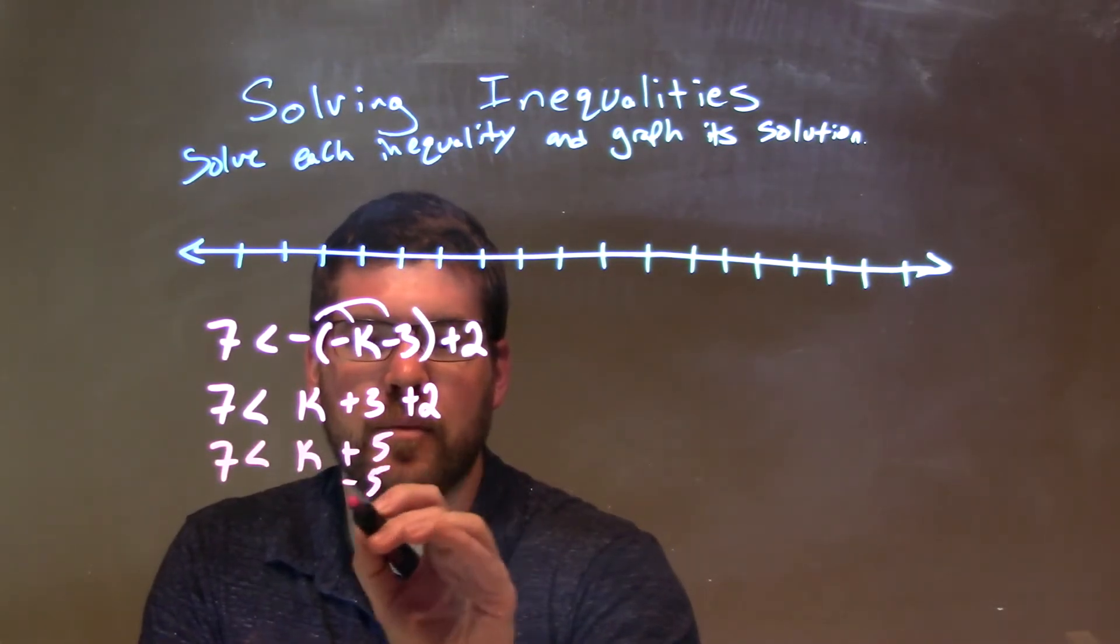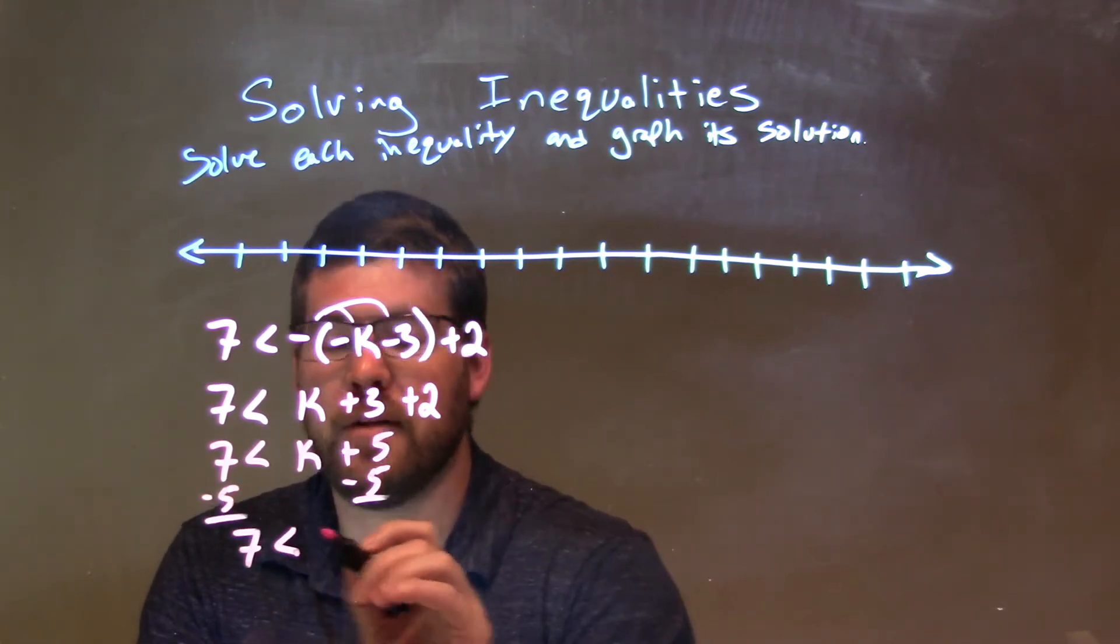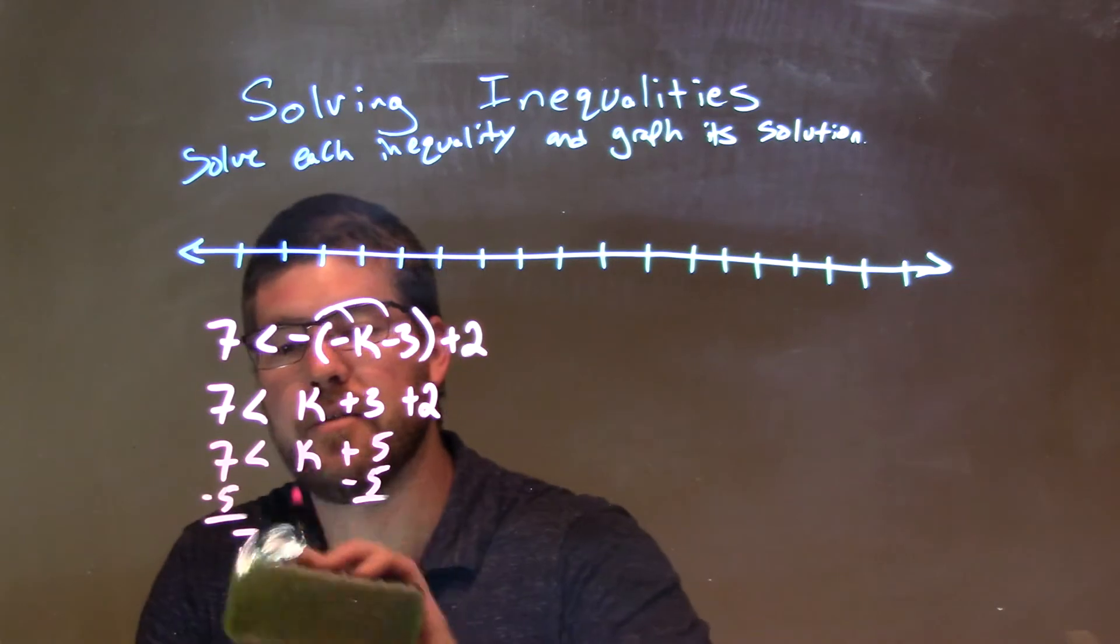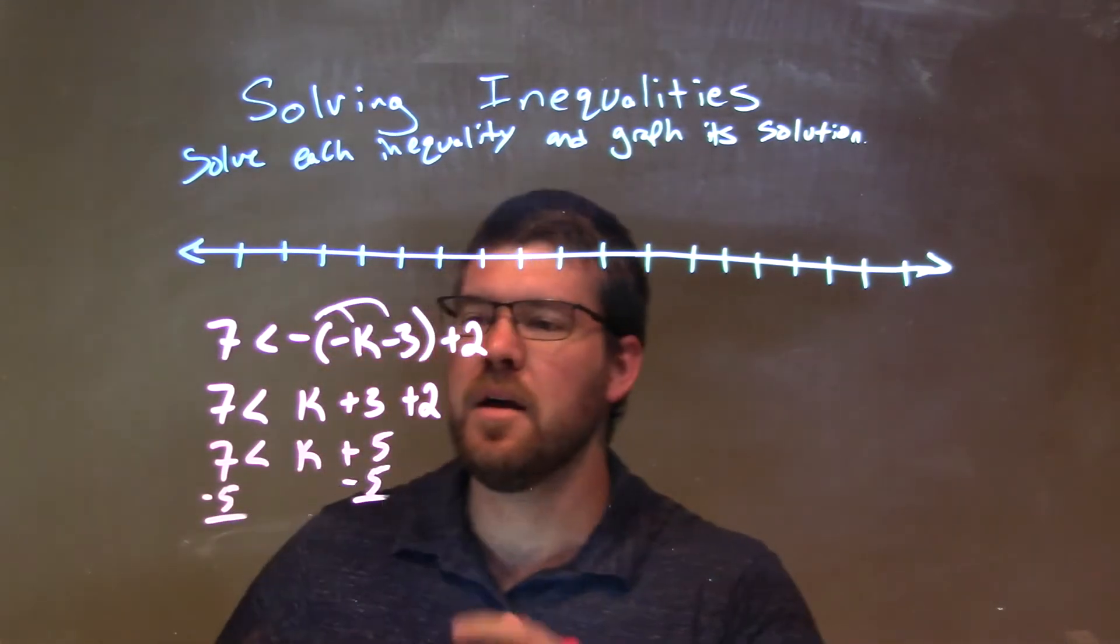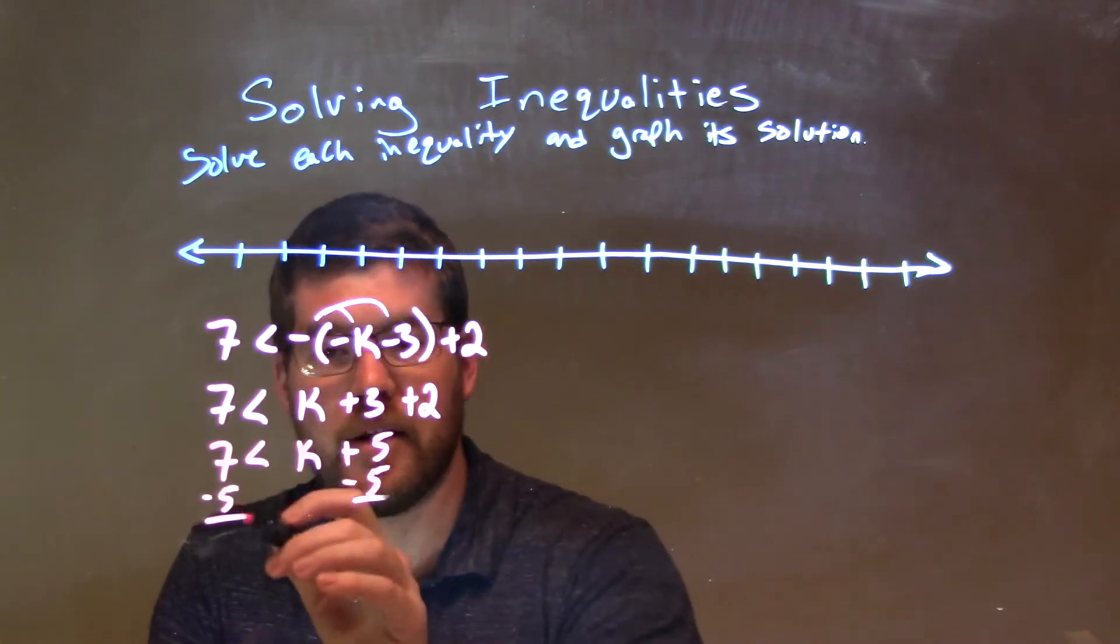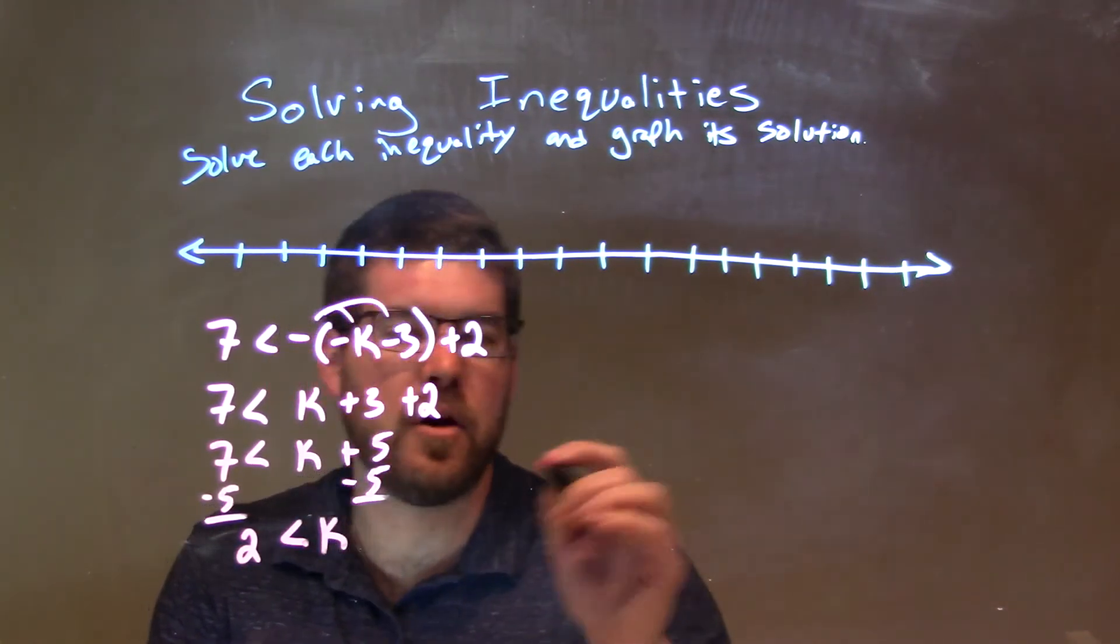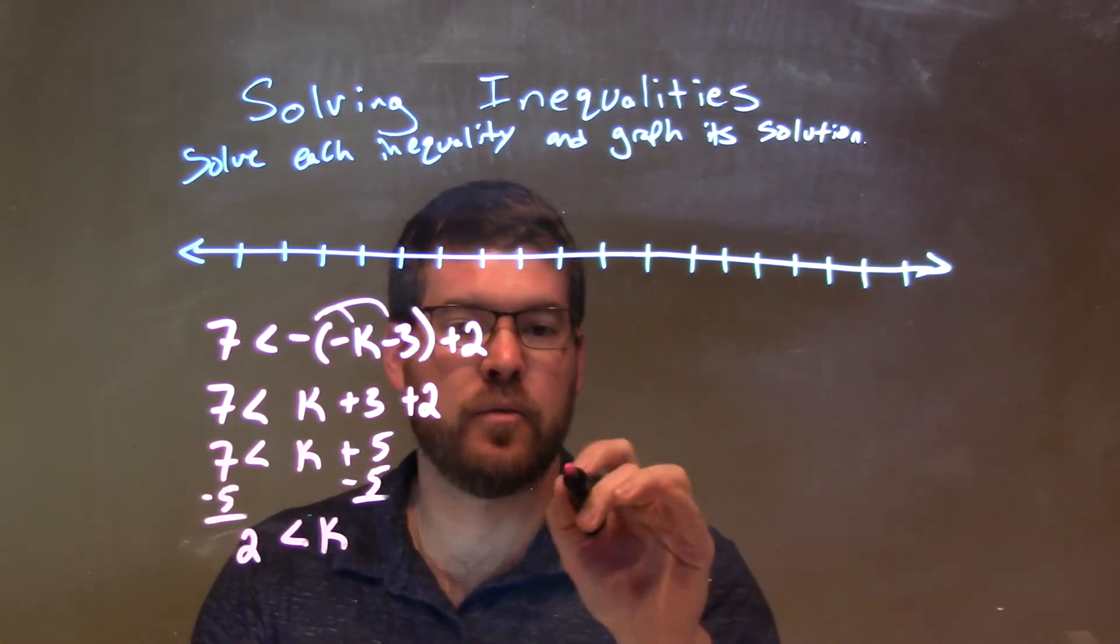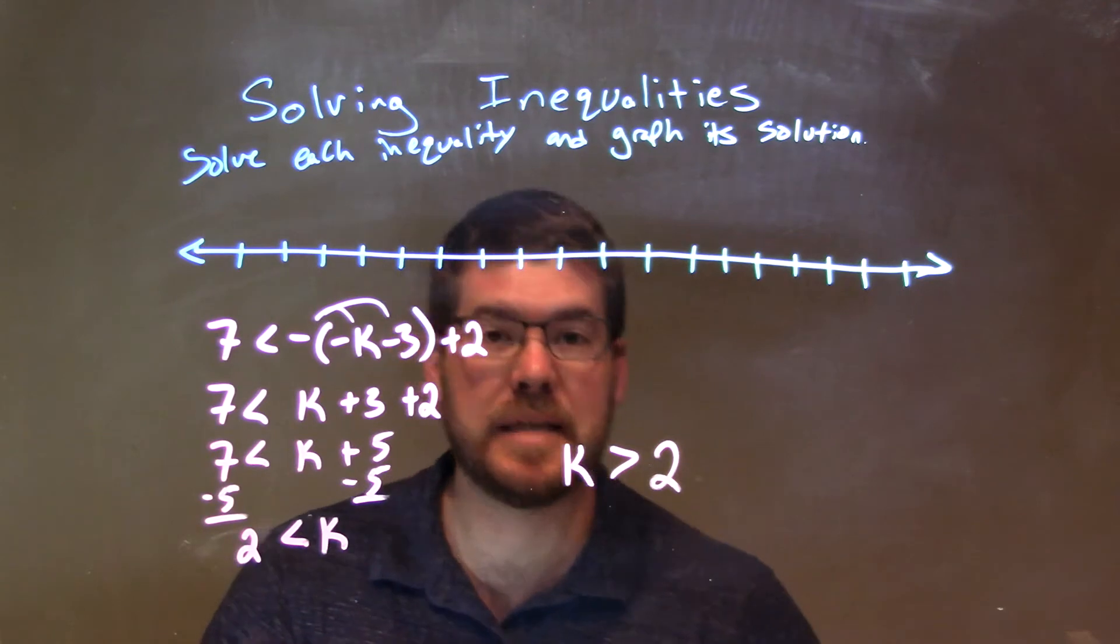From there, I subtract 5 from both sides. I'm left with... excuse me, got ahead of myself. Slow down there. 7 minus 5 is a positive 2, so 2 is less than k. It's greater than 2. They mean the same thing.